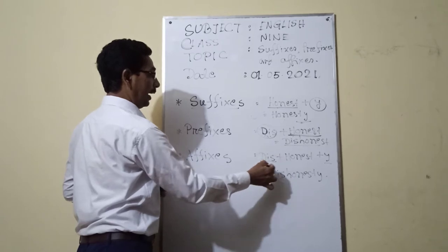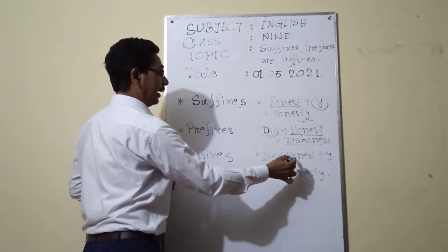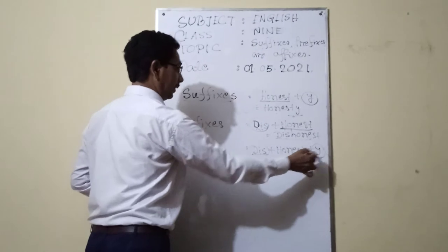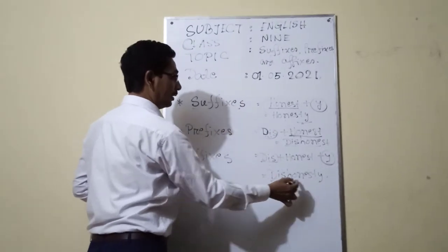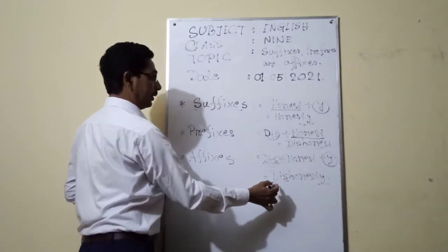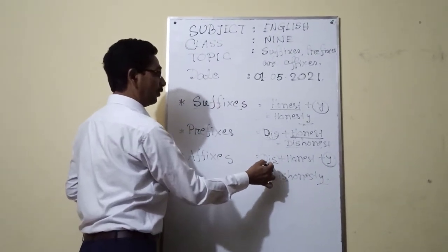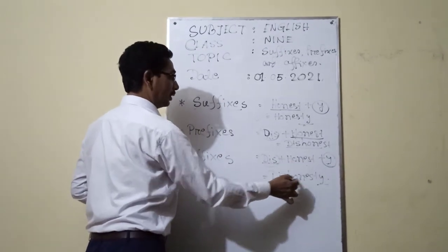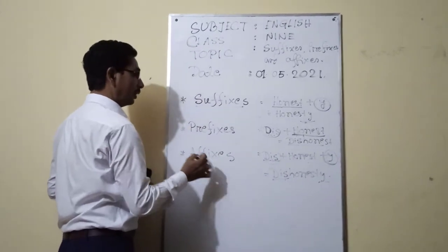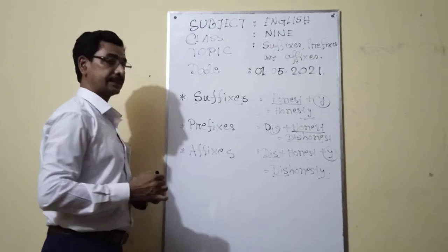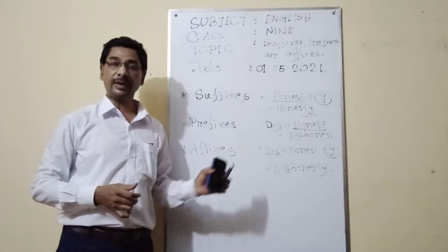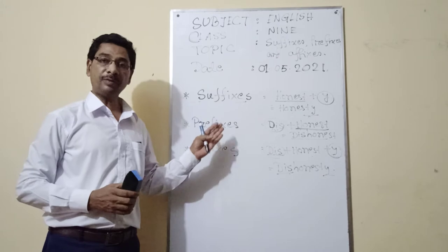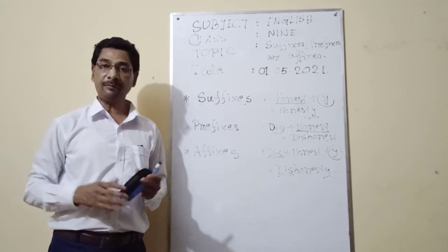For an example of affixes: you add 'dis' before and the main word is 'honest', then you add the syllable 'y' after. You add syllables before and after the main word. This gives 'dishonesty', and this is called an affix. This is a very simple definition of suffixes, prefixes, and affixes.